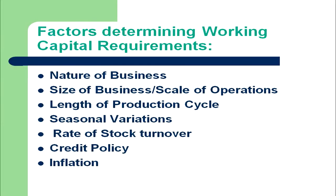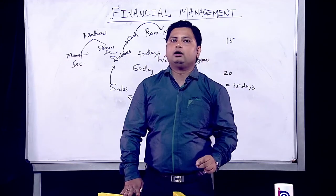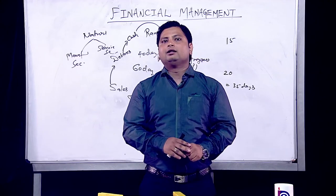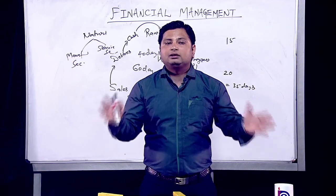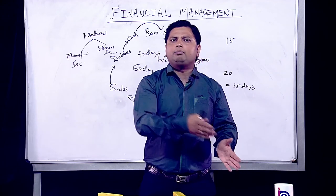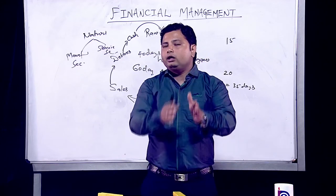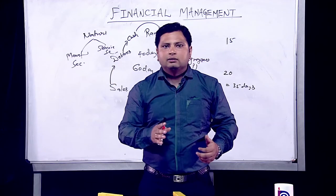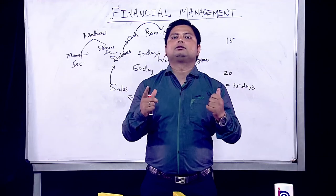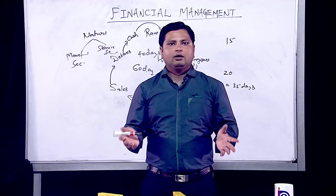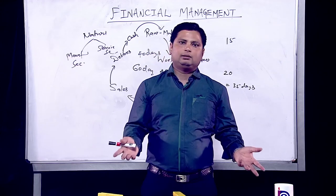The sixth factor is credit policy — strict versus liberal. If an organization follows a strict credit policy, say 90 percent cash sales and 10 percent credit, cash flow is good and less working capital is required. If the organization follows a liberal credit policy — 90 percent credit and 10 percent cash — most funds are blocked in debtors and high working capital is required. The seventh factor is inflation: if inflation is high, the organization requires a large amount of working capital; if inflation is normal, less working capital is needed.